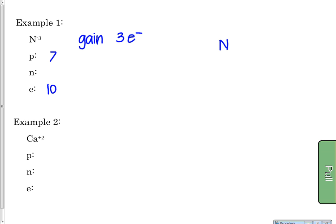For nitrogen, look at its atomic mass — it's about 14.01, which we round to 14. The mass number represents protons and neutrons together, and the atomic number is just the protons. So subtracting: 14 minus 7 gives us 7 neutrons for nitrogen.